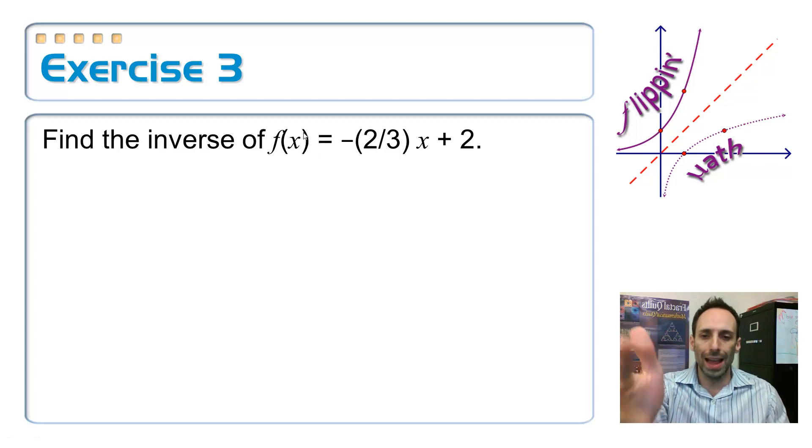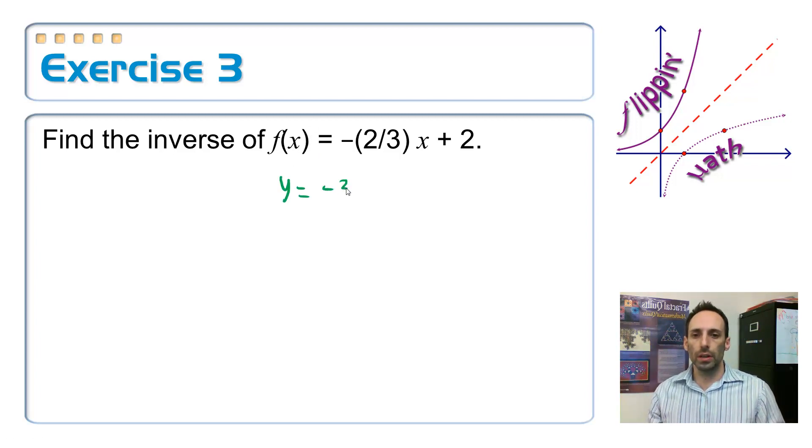So step one was, get rid of the f of x, make that a y, equals negative two-thirds x plus two. And now what do I do with the inputs and outputs? What does the inverse do? It switches them. So x is equal to negative two-thirds y plus two.